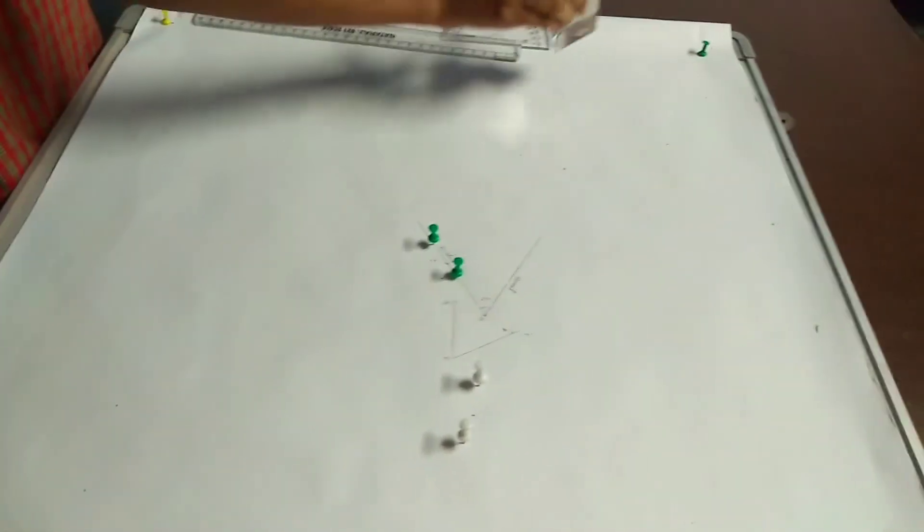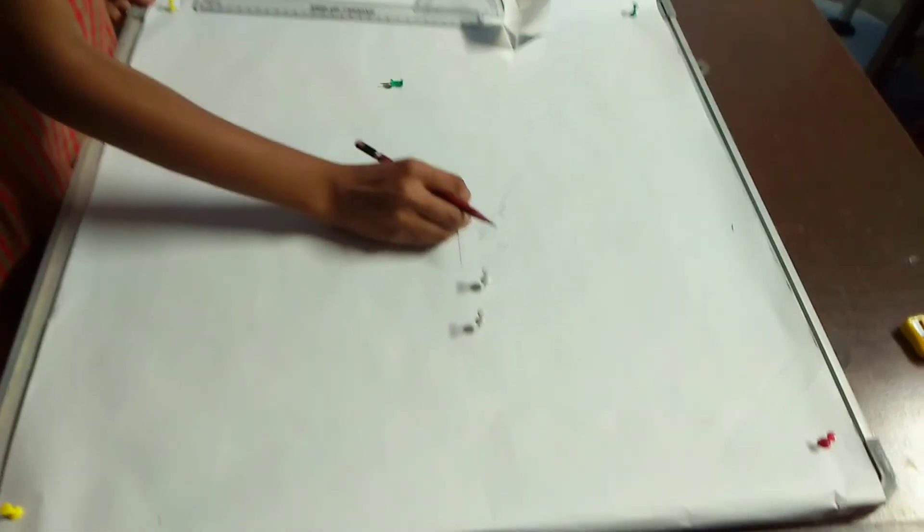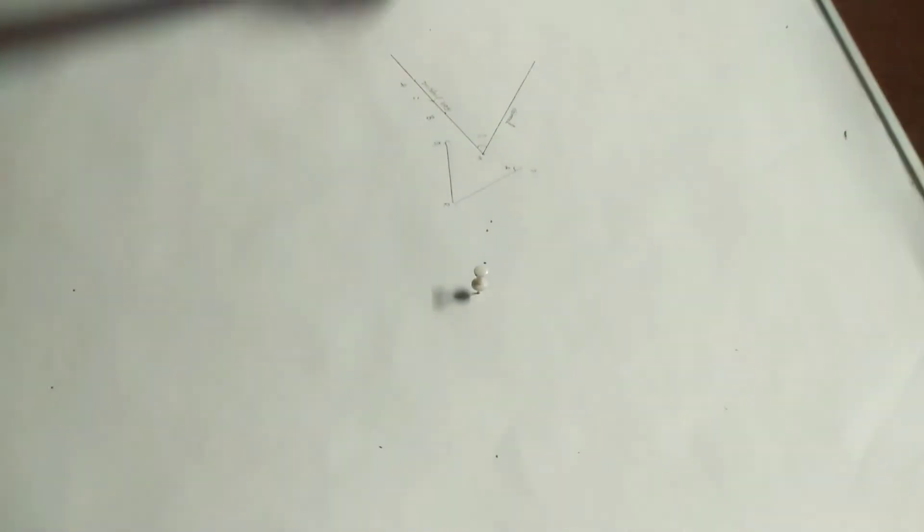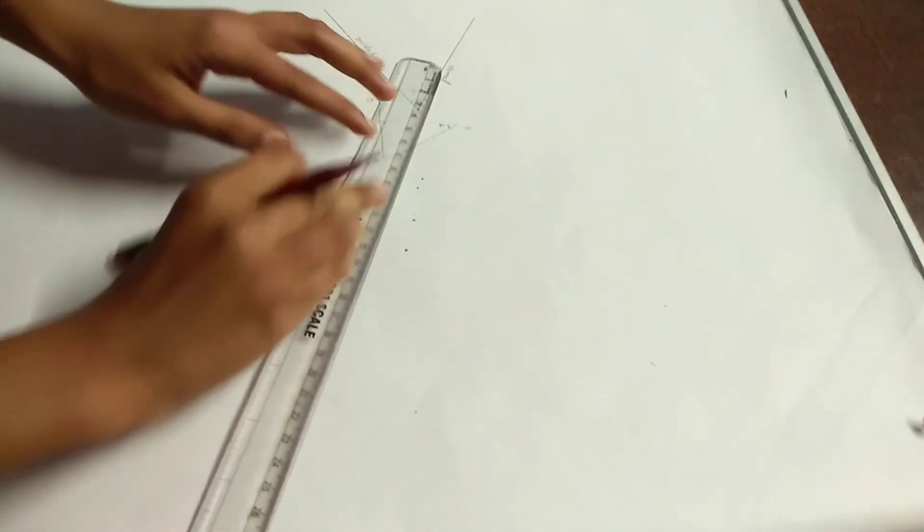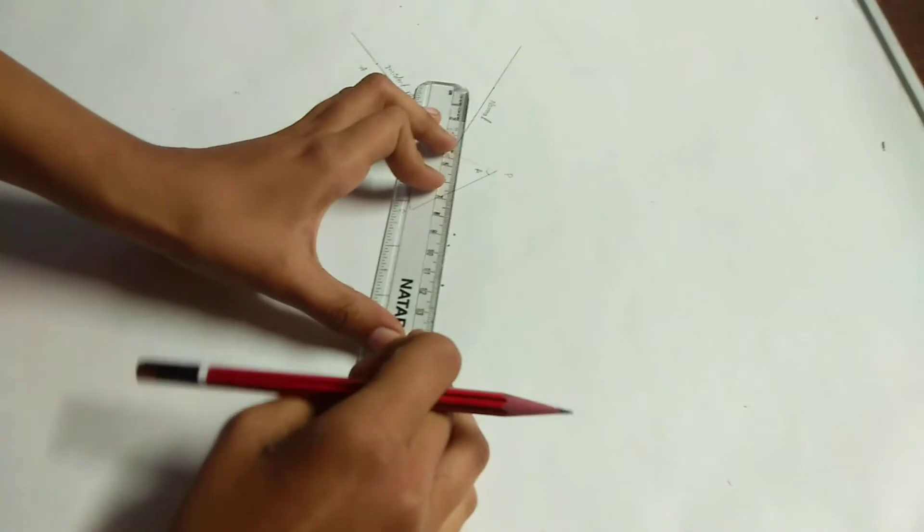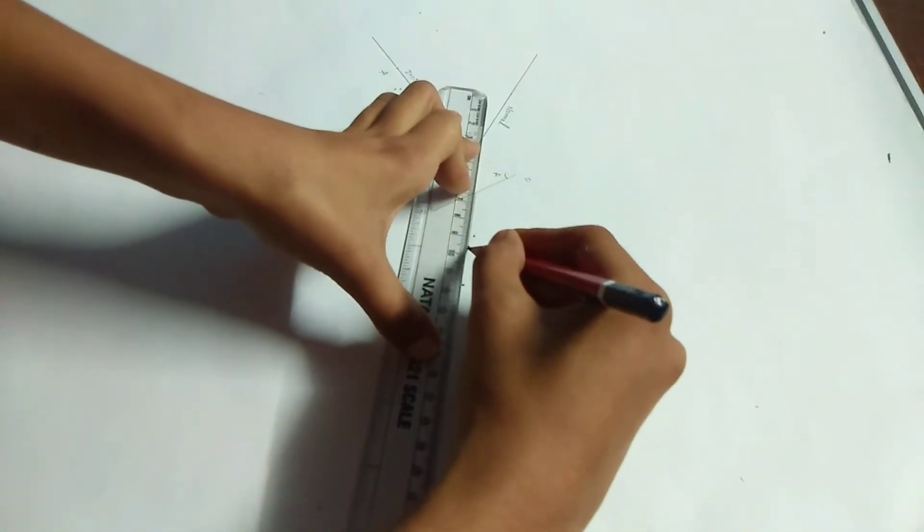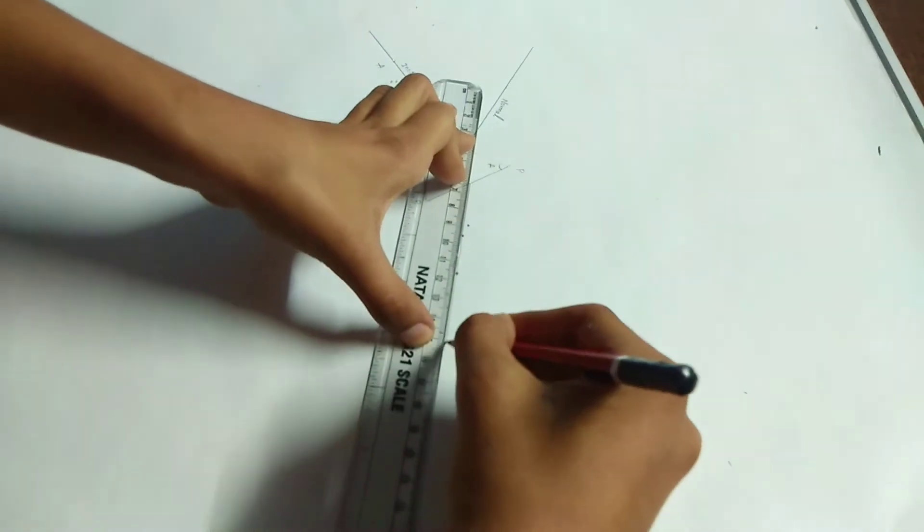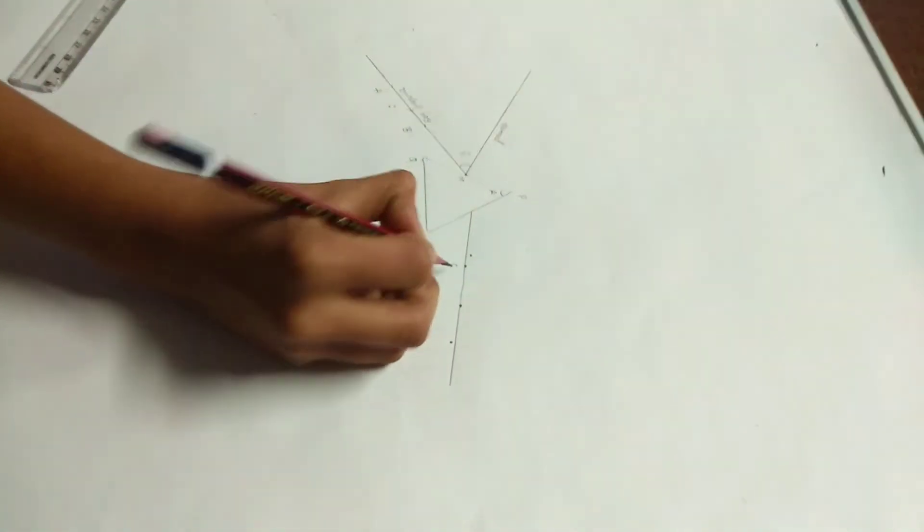Remove the prism. Take out the pins. Draw a line joining the pin holes formed by the pins. Mark the points at pin holes as C and D.